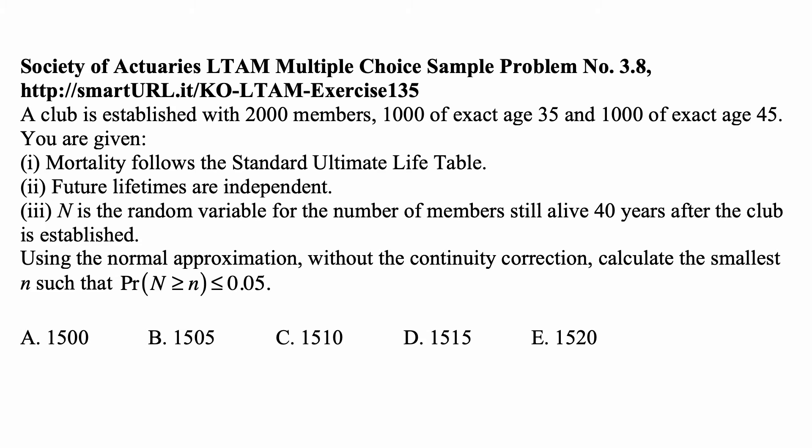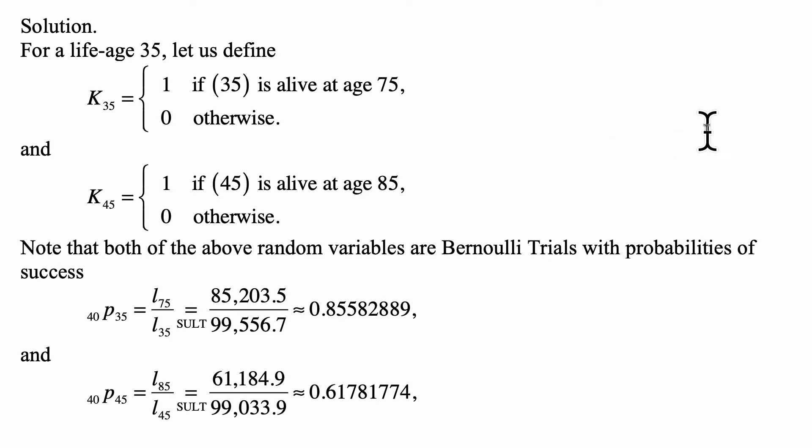Here's a problem for today, for example LTAM. A club is established with 2,000 members: 1,000 of exact age 35 and 1,000 of exact age 45. Mortality follows the standard ultimate life table; future lifetimes are independent. N is the random variable for the number of members still alive 40 years after the club is established. Using the normal approximation without the continuity correction, calculate the smallest n such that the probability that N is greater than or equal to n is less than or equal to 0.05.